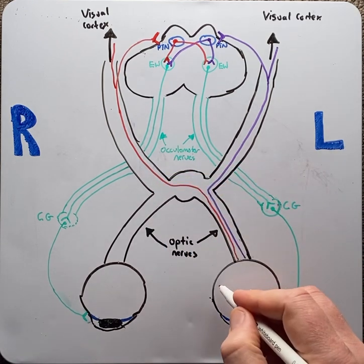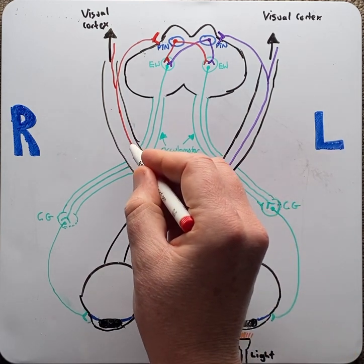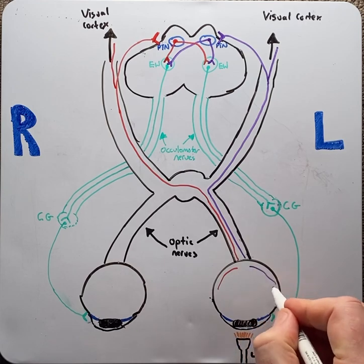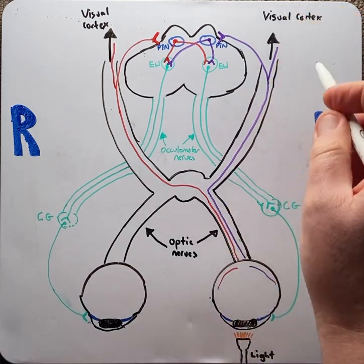But half of the information, the nasal part, will cross over through the optic chiasm to the right side of the brain, whilst the temporal part will be carried on the same side, the left side, to the visual cortex for processing.